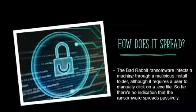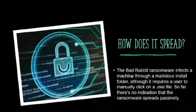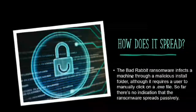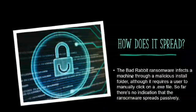How does it spread? The BadRabbit ransomware spreads through drive-by attacks where insecure websites are compromised. While the target is visiting a legitimate website, a malware dropper is downloaded from the threat actor's infrastructure. There is no indication that it spreads passively. It infects a machine through a malicious install folder, though it requires a user to manually click on an .exe file.